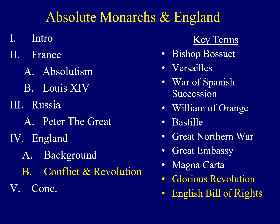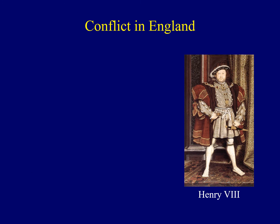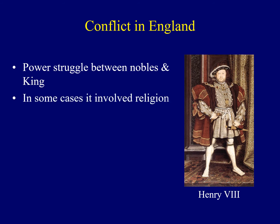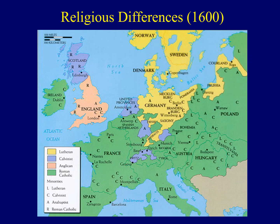Now, looking at some conflict and the so-called Glorious Revolution in England and its legacy: ever since the Magna Carta, there had been a power struggle between members of the nobility serving as members of Parliament and the king. In some cases this power struggle involved religion. Henry VIII broke with the Catholic Church and founded the Church of England, or the Anglican Church. A map identifies the different religious denominations common throughout Europe in 1600 — there were Lutherans, Calvinists, Roman Catholics, as well as Anglicans — and England was divided itself, as you can see with the different colors for the UK shown here.